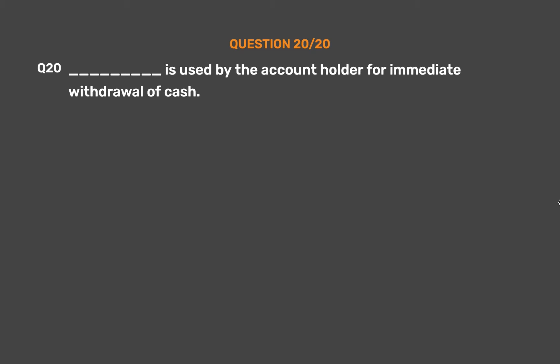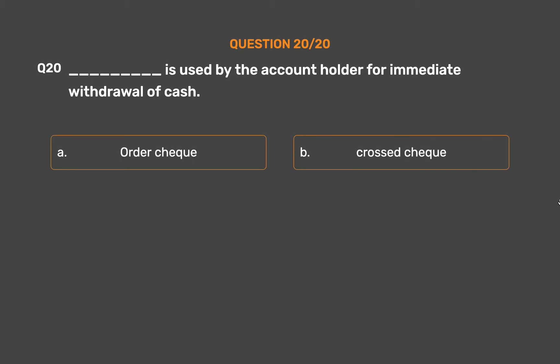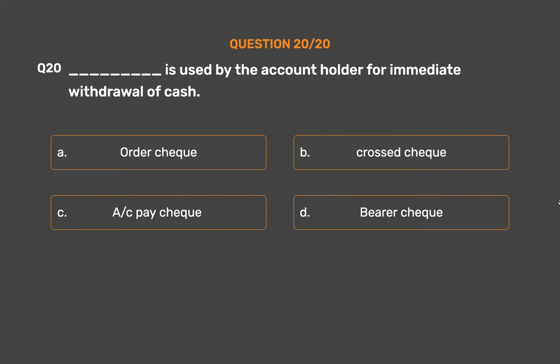Question number twenty: which is used by the account holder for immediate withdrawal of cash? Option A: order check. Option B: crossed check. Option C: AC payee check. Option D: bearer check.